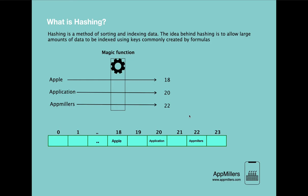Let's quickly recap what we have done. Using the magic function we converted our strings to numbers, and based on those numbers we inserted the strings into the array. We have successfully inserted these strings using hashing.